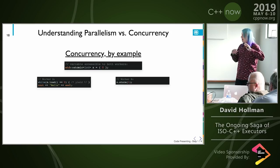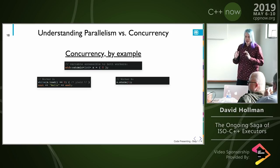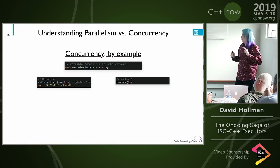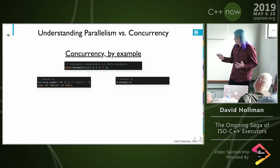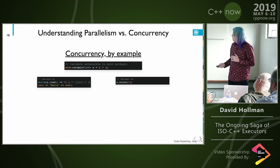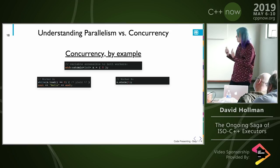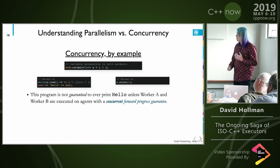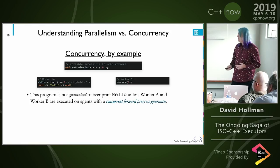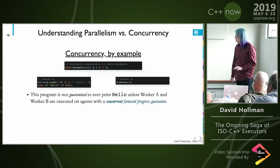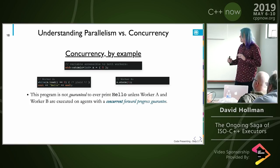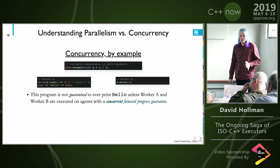By example, this is concurrency: if you have some variable accessible to both workers, and one is trying to load the variable while the other is trying to store something, this program — by the standard — is not guaranteed to ever print hello, unless these workers have a concurrent forward progress guarantee.